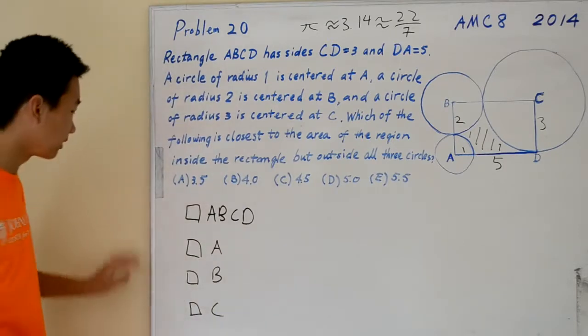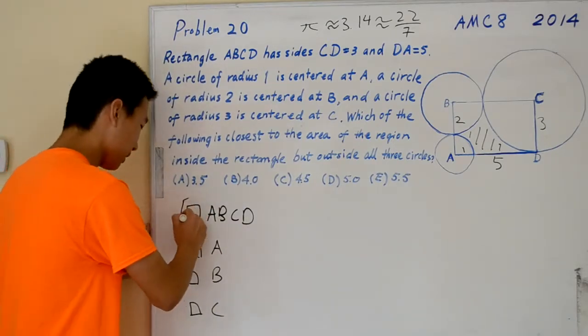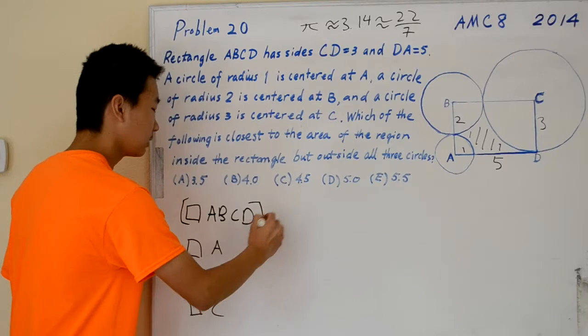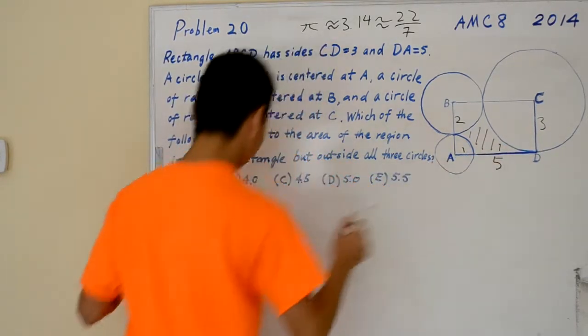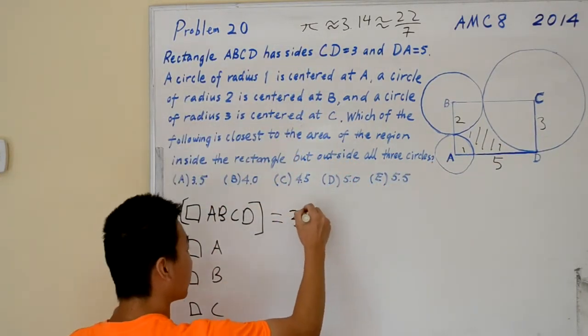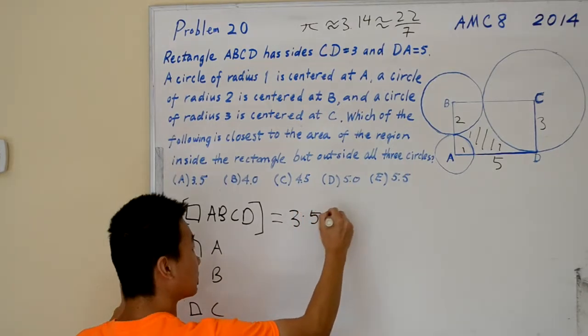Let's find the area of these. Area of ABCD is simply 3 times 5, which equals 15.